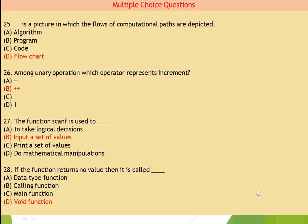Now question number 25: blank is a picture in which the flows of computational paths are depicted — the answer is flowchart. D is the right answer. Flowchart, as I have told you, means it's a pictorial or graphical representation of a program using graphical symbols like input/output symbols and process symbols.